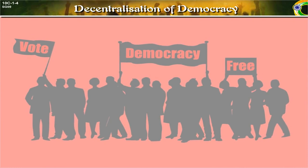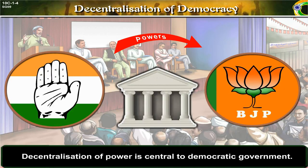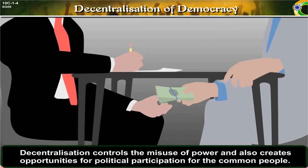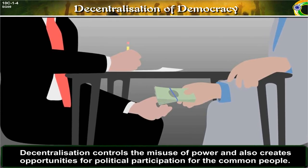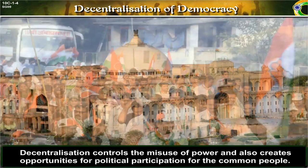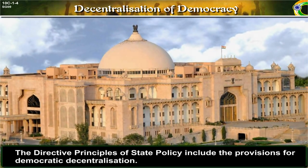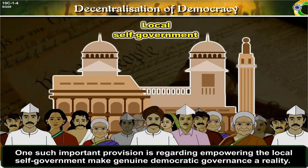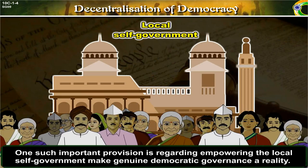Decentralization of democracy. Decentralization of power is central to democratic government. Decentralization of power means the transfer of decision-making power and assignment of accountability and responsibility for results. Decentralization controls the misuse of power and also creates opportunities for political participation for the common people. The directive principles of state policy include provisions for democratic decentralization, one such important provision being regarding empowering local self-government.